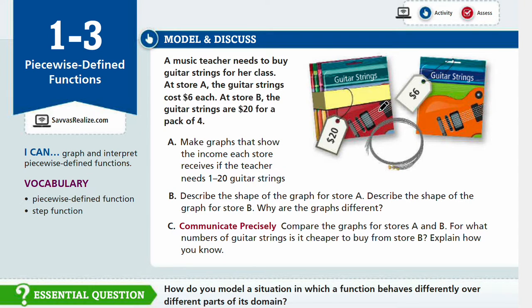So every guitar string in store A would be $6 each. And then here, you have a pack at store B for $20. And we know that it's a pack of four, so you can do a little bit of math to figure out how much it costs for one string. $5, right? So it is cheaper to buy a pack at store B compared to buying one string at store A if we're just thinking about one string.